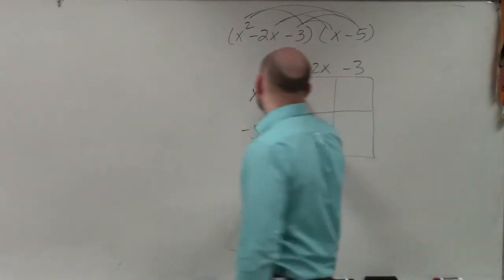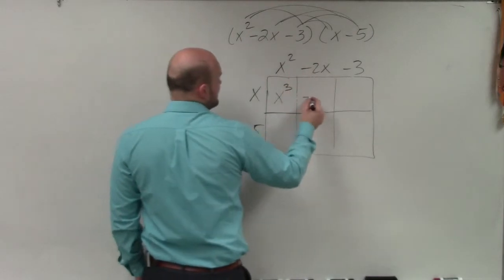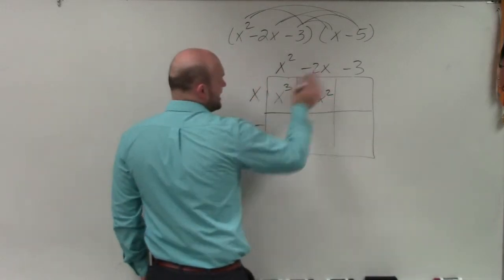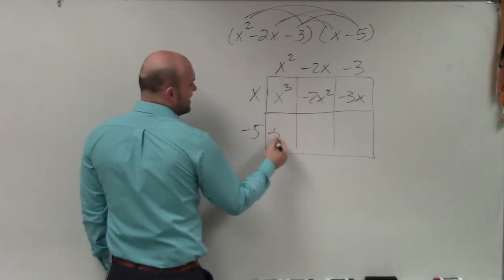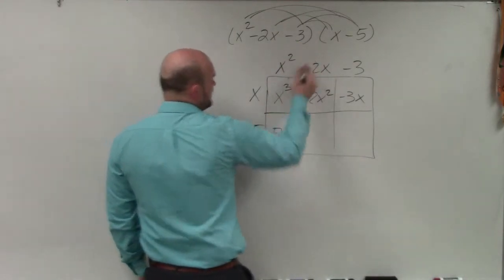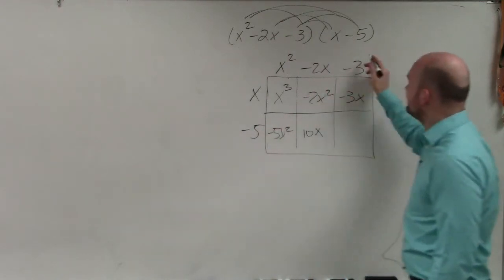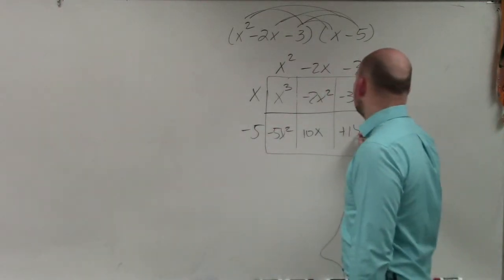x times x squared is x cubed. x times negative 2x is negative 2x squared. x times negative 3 is negative 3x. x squared times negative 5, negative 5x squared. Negative 5 times negative 2 is positive 10x. x times negative 5 times negative 3 is a positive 15.